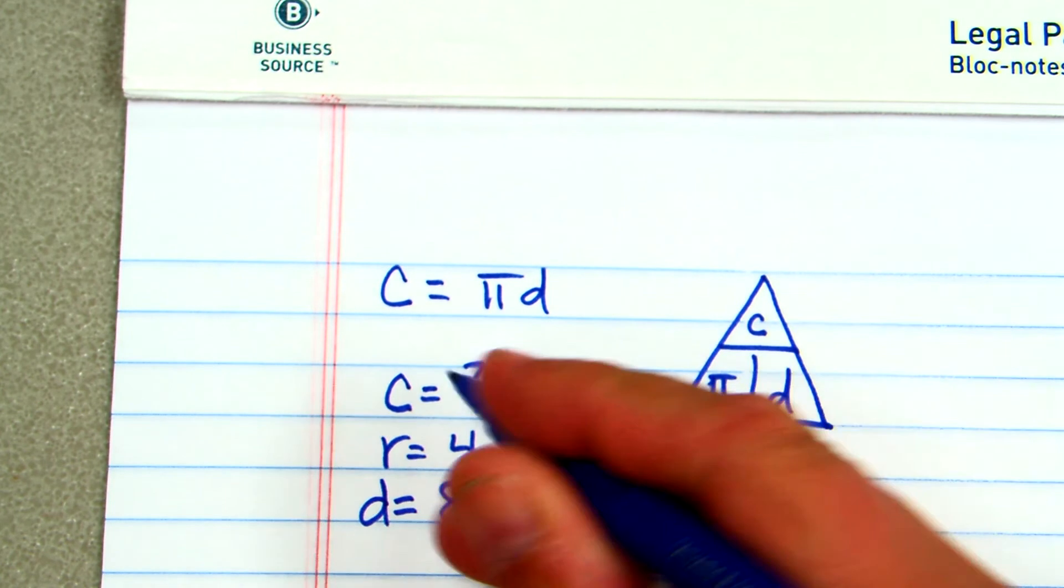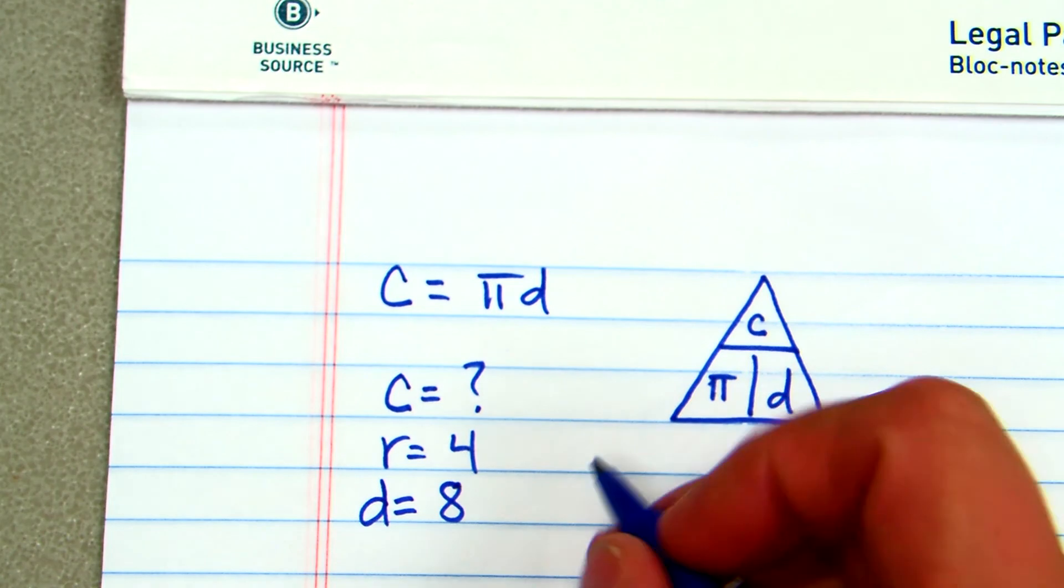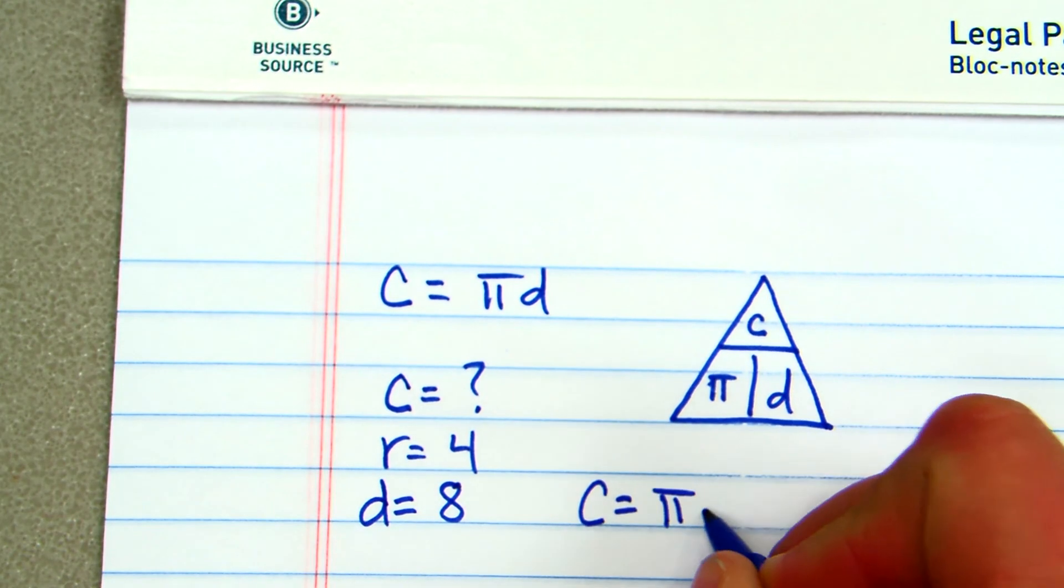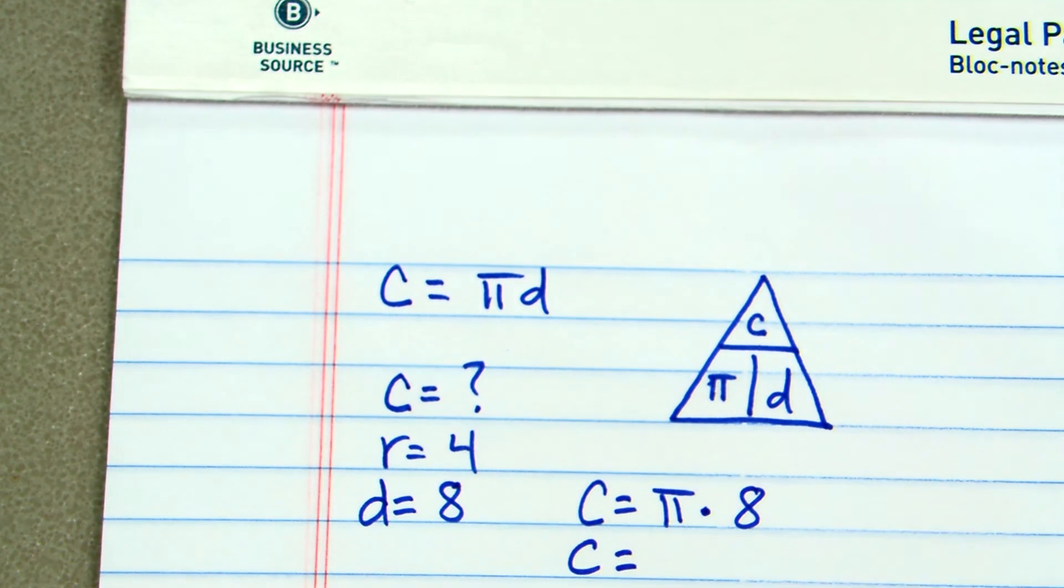Now, I'm looking for circumference, so I cover up my c, pi times d. So circumference is equal to pi times 8. Circumference would then be equal to 3.14 times 8.